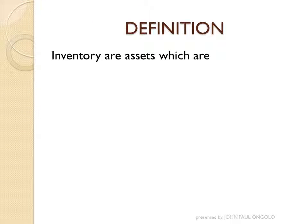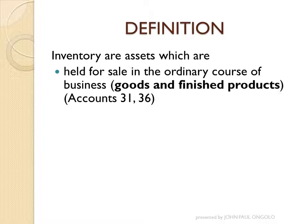Let us start by defining or classifying inventory or stock. Inventory or stock are assets, and as such they are recorded in the asset section of the balance sheet. They are assets either held for sale in the ordinary course of business — either goods or finished products. Goods held for sale are recorded in account 3.1, and finished products are recorded in account 3.6.